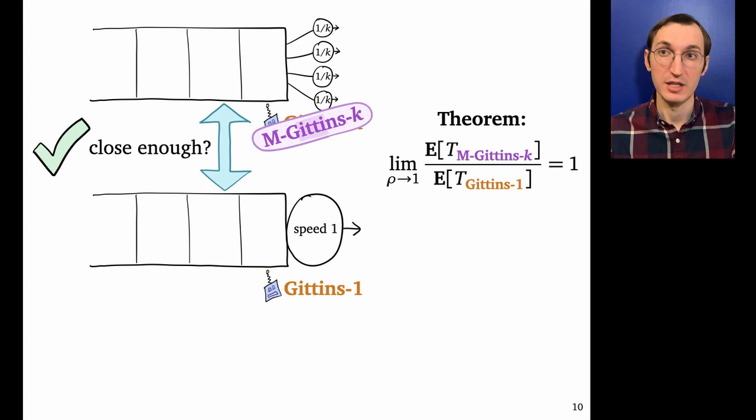So what we were able to prove is that in the heavy traffic limit, the mean response time of M-Gittins-k is asymptotically equivalent to that of Gittins-1, the optimal M/G/1 policy. And because one big server in our free preemption model is more powerful than k small servers, this implies heavy traffic optimality for M-Gittins-k.